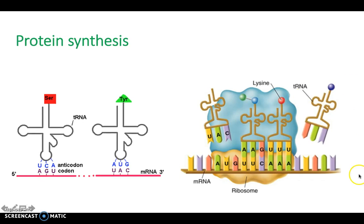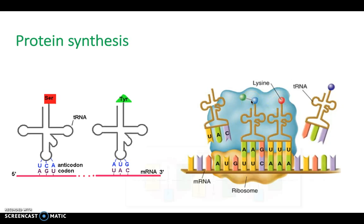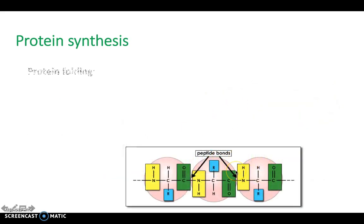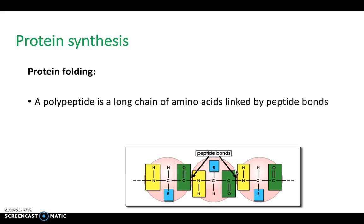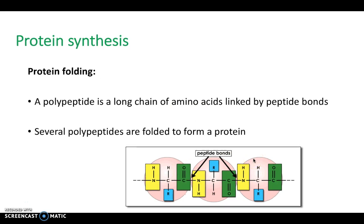This is actually a lot easier to understand in picture form. This is your mRNA strand that has left the nucleus and come into the cytoplasm, attached to the ribosome. tRNA comes to it and complementary bases attach. At the end of the tRNA is an amino acid, for example lysine or tyrosine. These join together via peptide bonds — it's the joining of these amino acids at the end of the tRNA which form your peptide. You can see the peptide bonds between them, and this protein is then folded. A polypeptide is a long chain of amino acids linked by peptide bonds, and several polypeptides are folded together to form a protein.